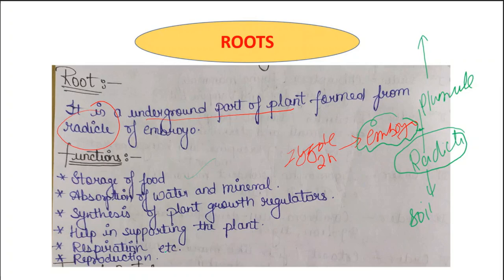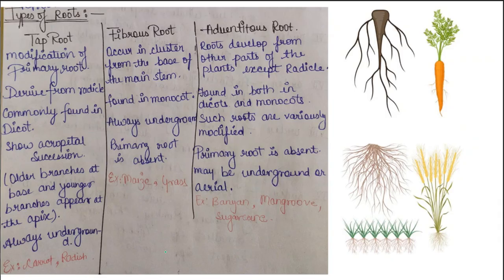Now let us study the different types of root. Basically, roots are classified into three major categories: one is tap root, second is fibrous root, and third is adventitious root.